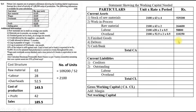Finished Goods are valued at cost of production (143.5), period one month = four weeks: 2,100 × 143.5 × 4 = 12,05,400. Debtors are at selling price (185.5), period two months = eight weeks, minus 20% cash sales: 2,100 × 185.5 × 8 × 80% = 24,93,120. Cash balance is given directly as 42,000. Total Current Assets = 47,03,370.